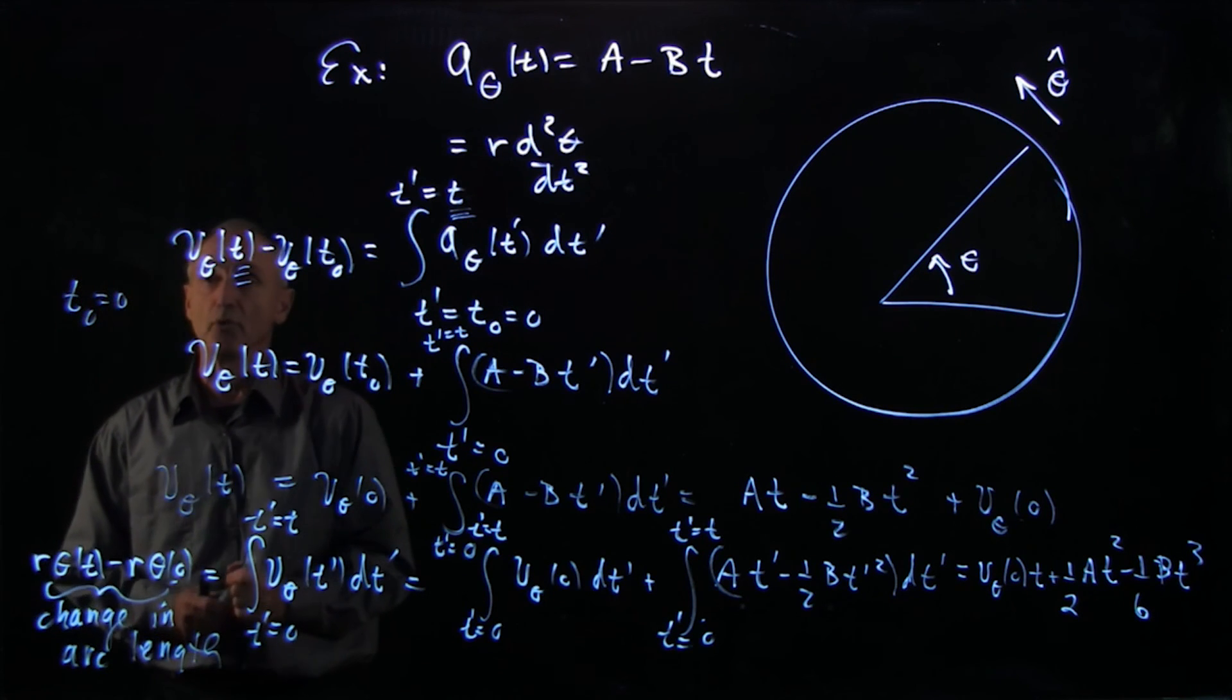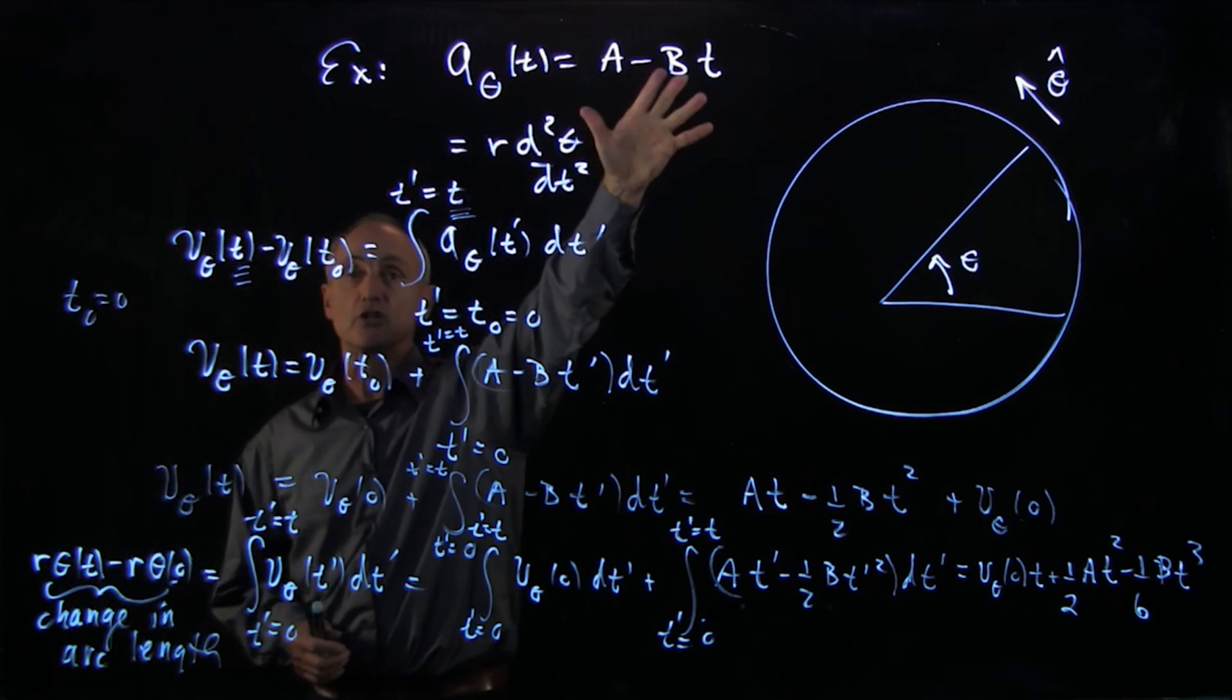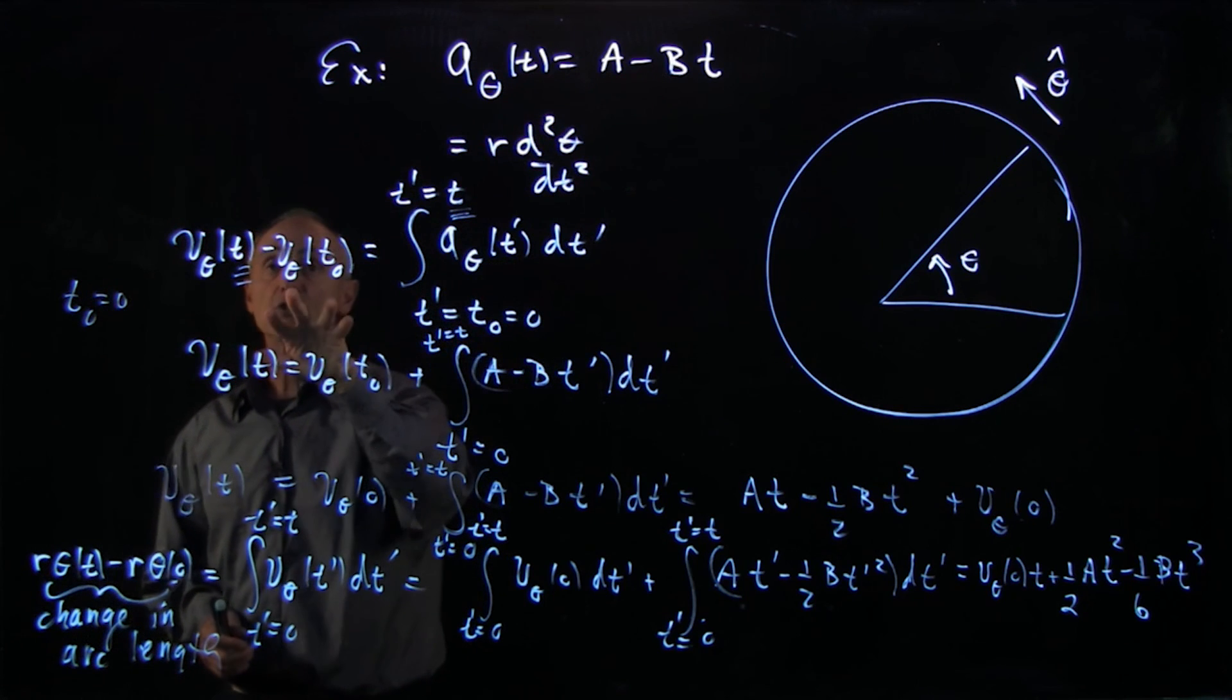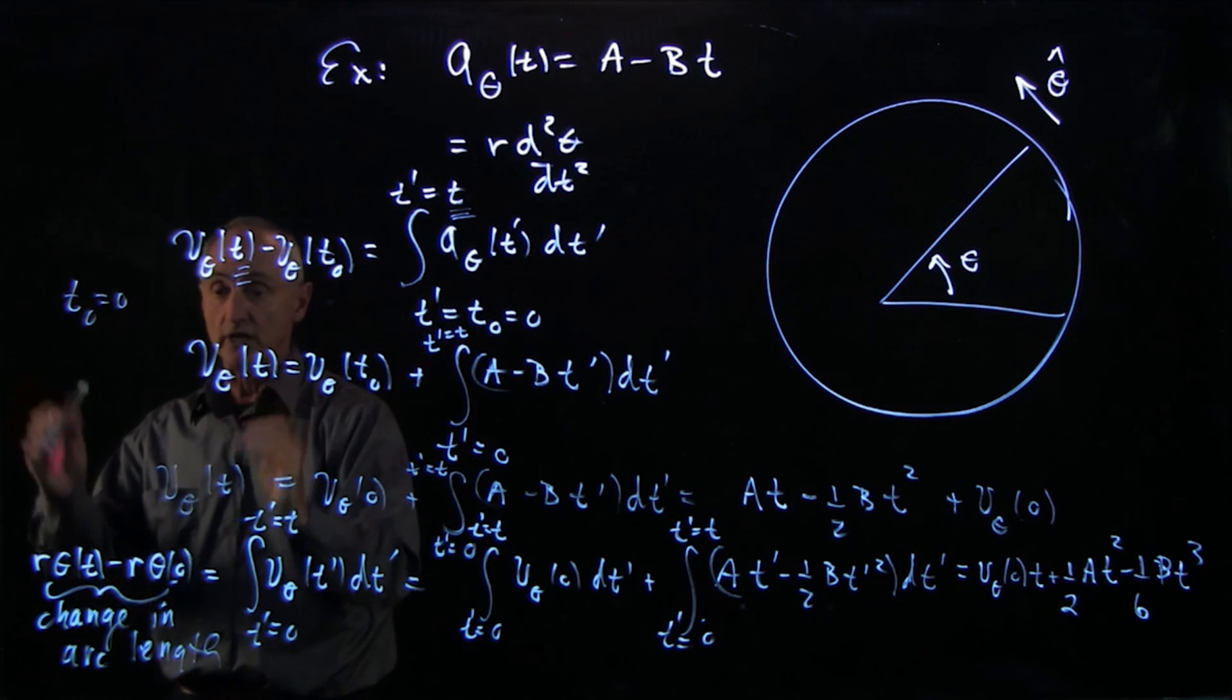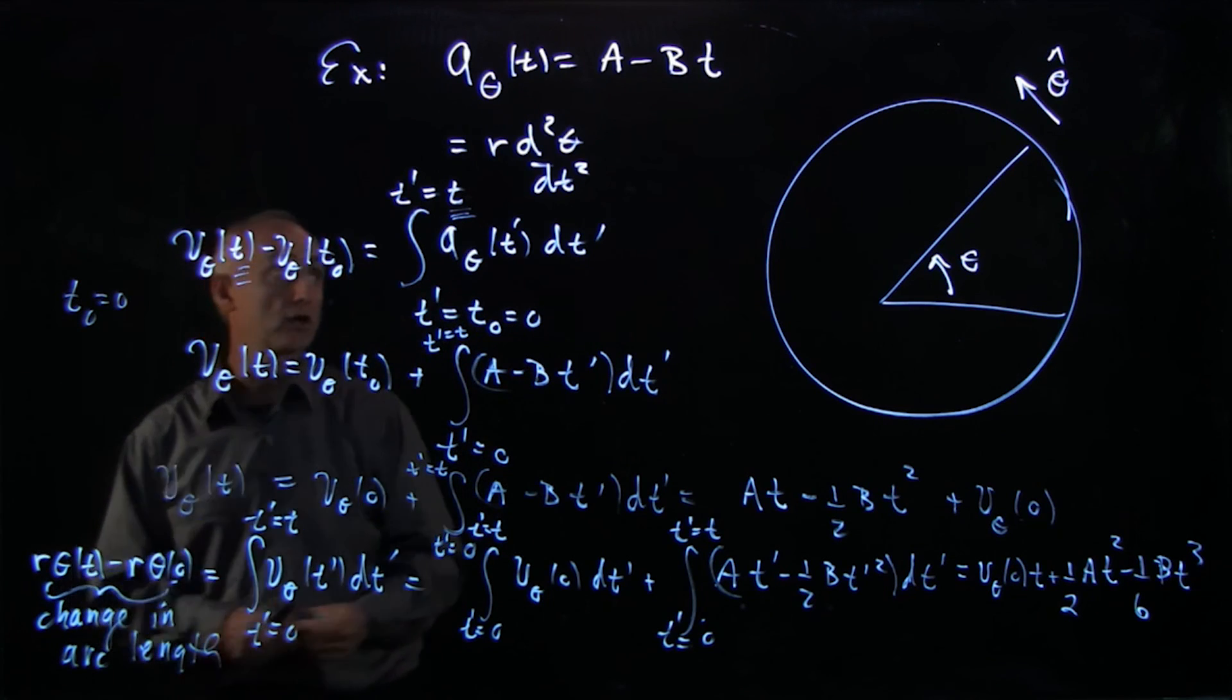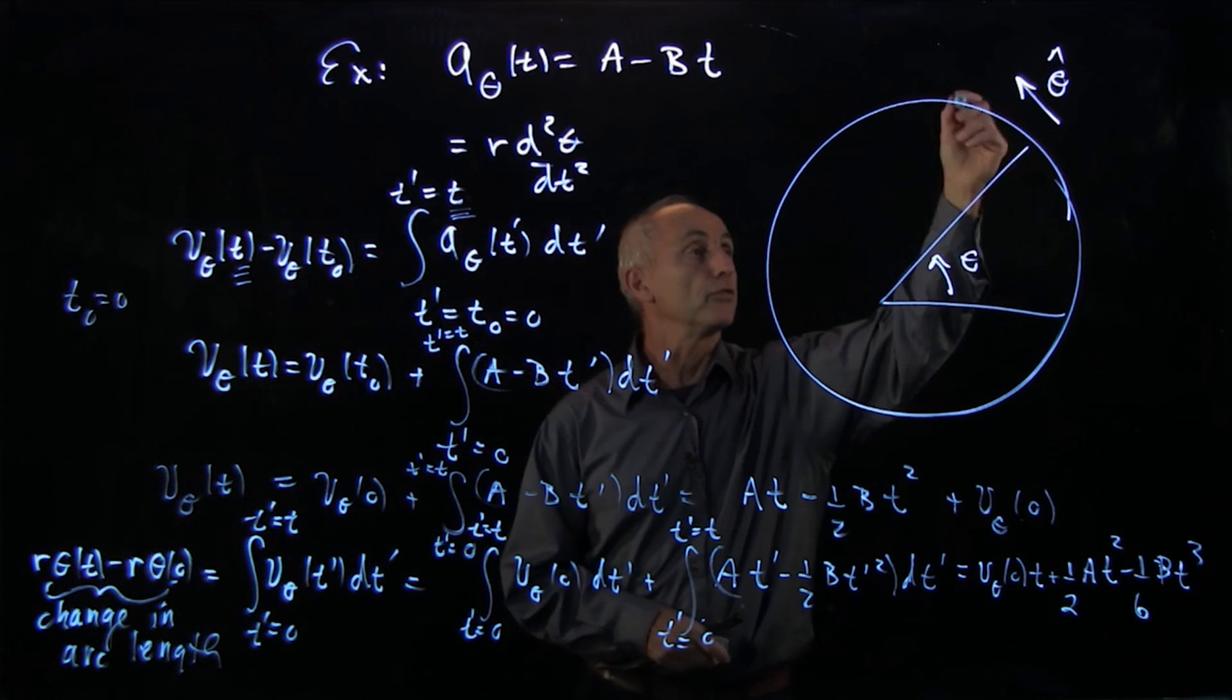And that's a typical example of where we're given tangential acceleration. We integrate it to get the tangential velocity. And then when we integrate the tangential velocity, we're getting the change in arc length around the circle.